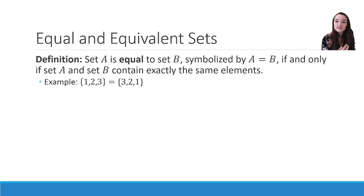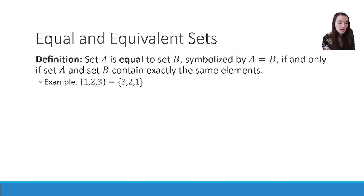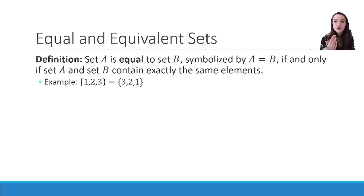A set A is equal to another set B, symbolized using the equal sign, if and only if set A and set B contain exactly the same elements. Order does not matter when we talk about sets. So the sets {1, 2, 3} and {3, 2, 1} are the same. Think about a deck of cards — if I shuffle it, it's still the same deck of cards. It still has all the same elements; we wouldn't say it's a new deck just because the order changed.